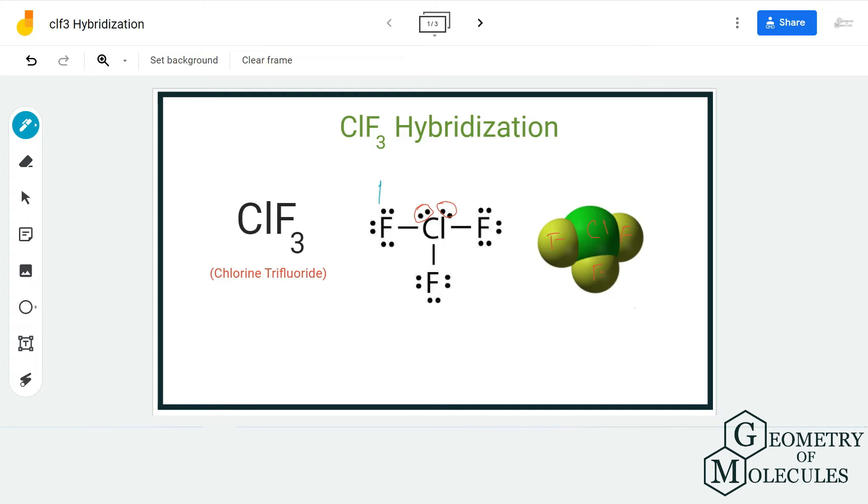of electron regions around the central atom. Here the electron regions for chlorine atom will be five because there are three bonds, that is three bonding pairs, and there are two lone pairs of electrons. So there are five electron